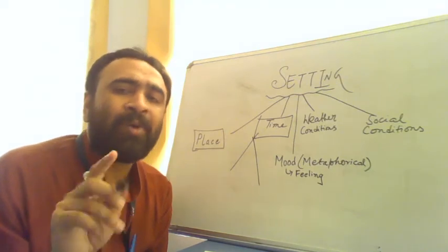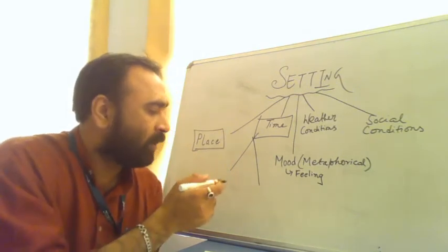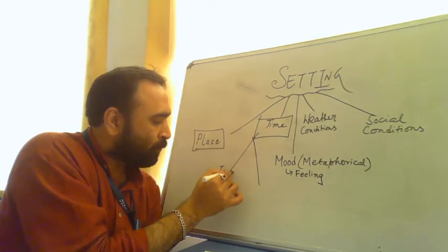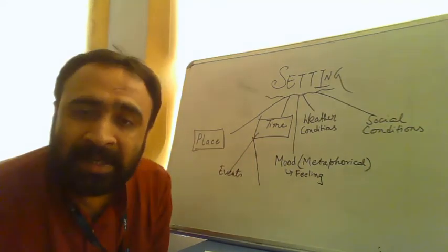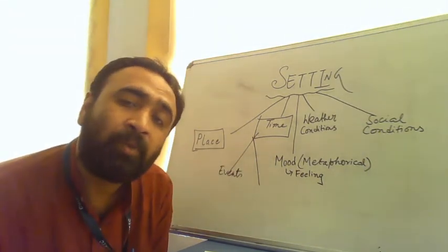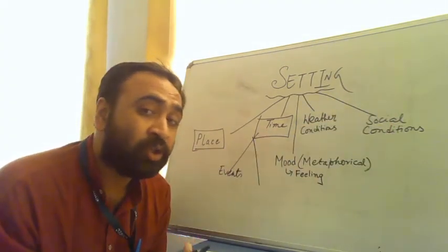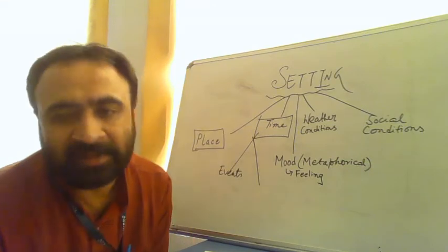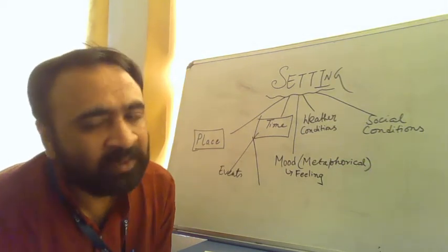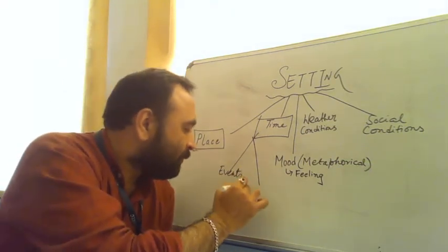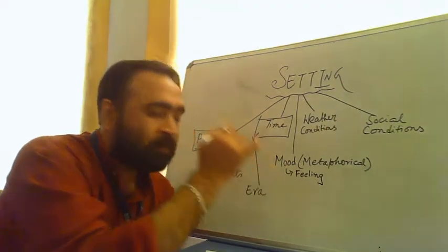One, the time of the event in the story. And at what time did this happen? What era did this happen? 19th century, 20th century, 21st century, or for that matter, 27th century, which has not yet come, stuff of science fiction.